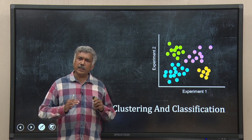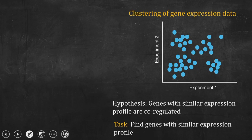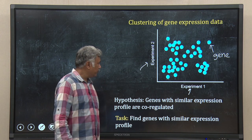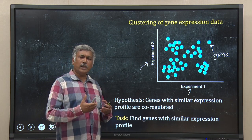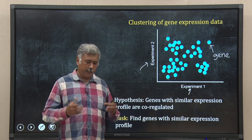Let me start with clustering and with gene expression data. Suppose I am doing a gene expression experiment and I have two experimental conditions, 1 and 2. Each of these data points is actually one gene, an individual gene. You can imagine I am doing some high-throughput experiment like RNA-seq or microarray.